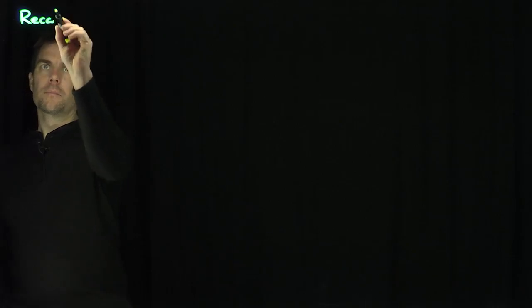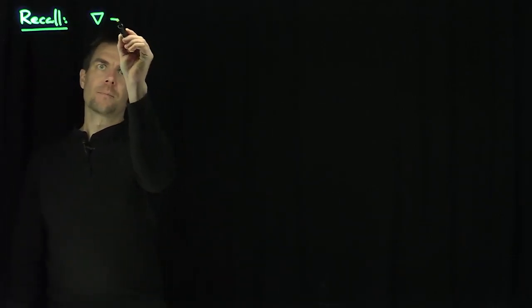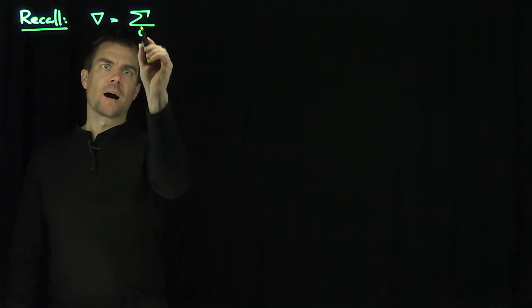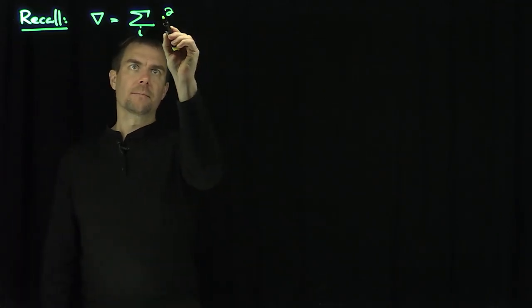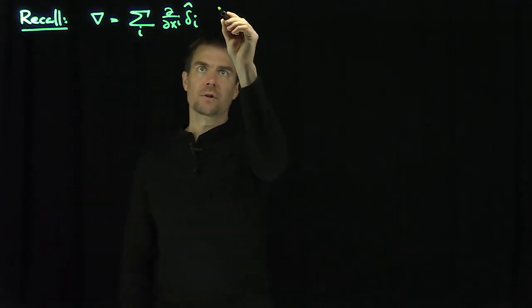Let's recall the Euclidean definition. The gradient operator is given by the sum over i of d by dx i delta i hat. This is our gradient differential operator.